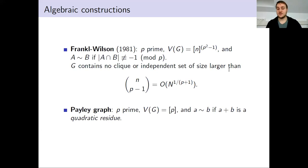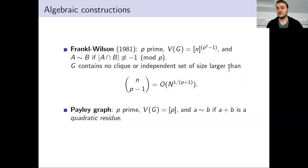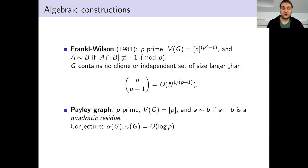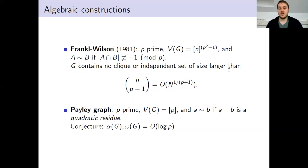Another famous construction extensively studied in connection to Ramsey problems is the Paley graph. The Paley graph is defined as follows: take some prime P, the vertex set is the residues modulo P, and we connect two residues by an edge if their sum is a quadratic residue. It is conjectured that these graphs are actually very good Ramsey graphs — they have only logarithmic size cliques and independent sets. Unfortunately, this is a long-standing open problem, but these are potentially very good constructions.